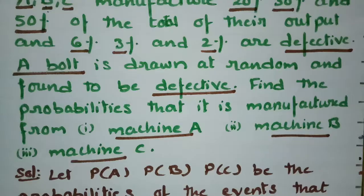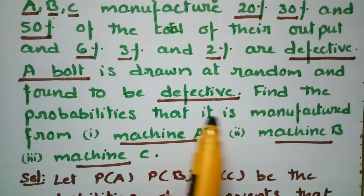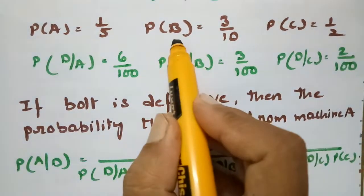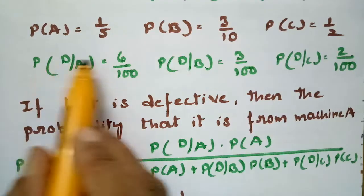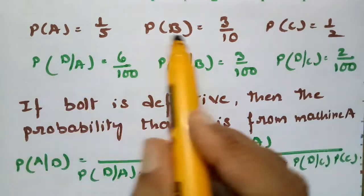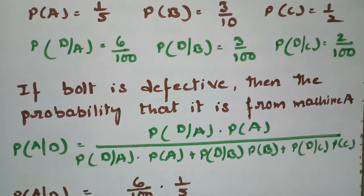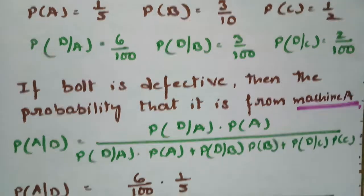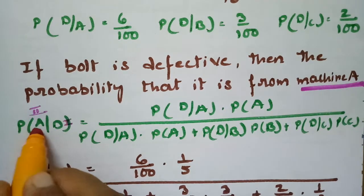A bolt is drawn at random and found to be defective. We need the probability that this defective bolt is from machine A. Machine A produces 1/5 of the bolts, machine B produces 3/10, and machine C produces 1/2. The defective rates are 6/100, 3/100, and 2/100 respectively. If a bolt is defective, find the probability it is from machine A.